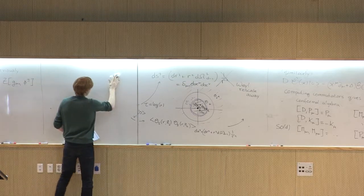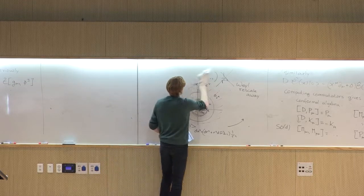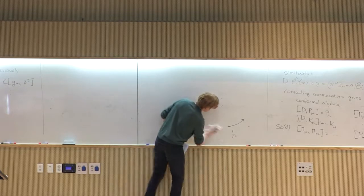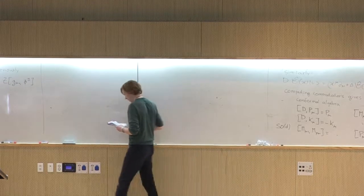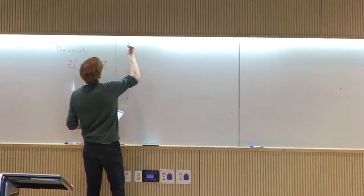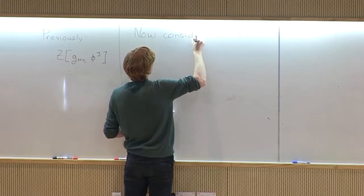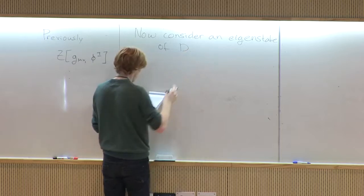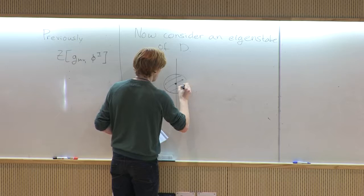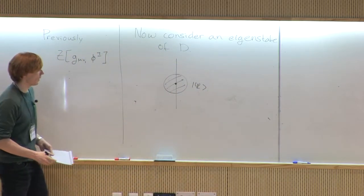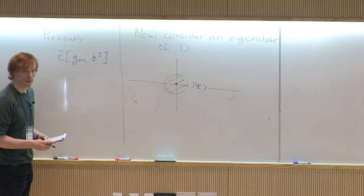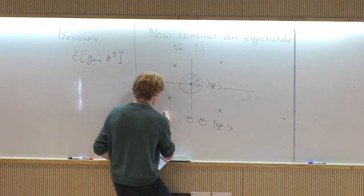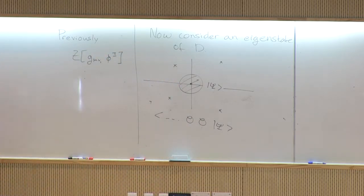For states generated by two or more operators, we need to work a little bit more. In the last few minutes, we'll draw some pictures. Consider an eigenstate psi of the dilatation operator — those states form a basis — and compute a correlation function psi with some other operators O inserted.